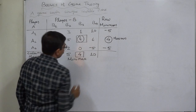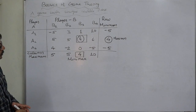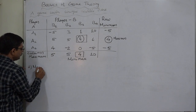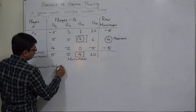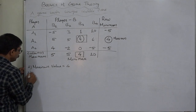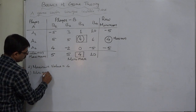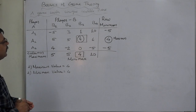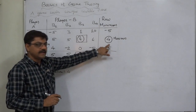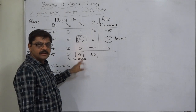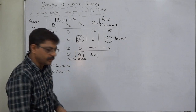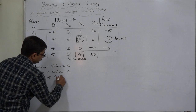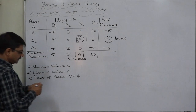So now we have two answers: the maximin value equals 4, and the minimax value is also 4. Since minimax and maximin values are equal, that same value becomes the value of the game. So the third answer is: value of game V = 4.